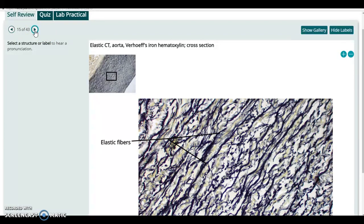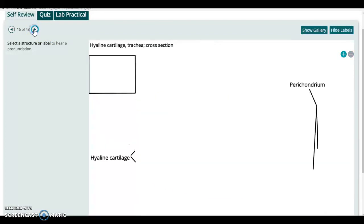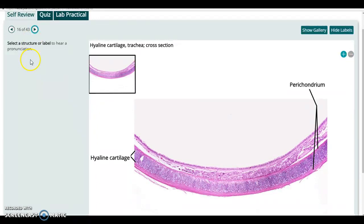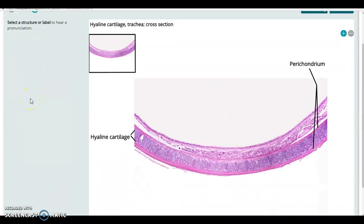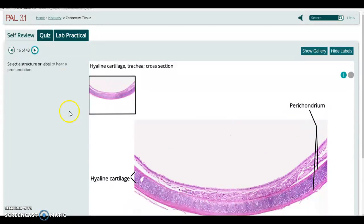Yet another close up view of the elastic fibers in the aorta. The rest of this is all cartilage and bone, which we'll do as a separate review as part of a separate lab. Good luck. Enjoy the tissues.